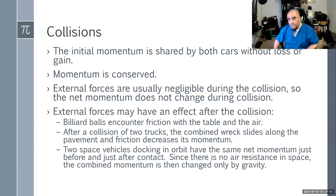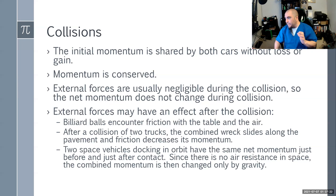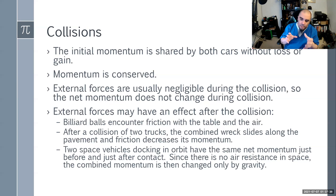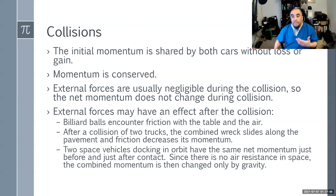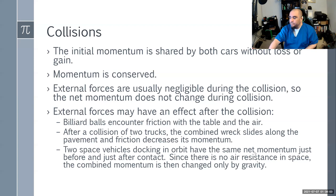If two space vehicles docking in orbit have the same net momentum just before and after contact, since there's no resistance in space, the combined momentum is changed only by gravity. A spaceship must match the velocity and rotation of the ISS to dock — if traveling faster, it imparts speed on the ISS and changes its vector; if slower, the ISS could rip off the docking coupler. Perfectly elastic collisions are not common in the everyday world due to friction and heat generation.